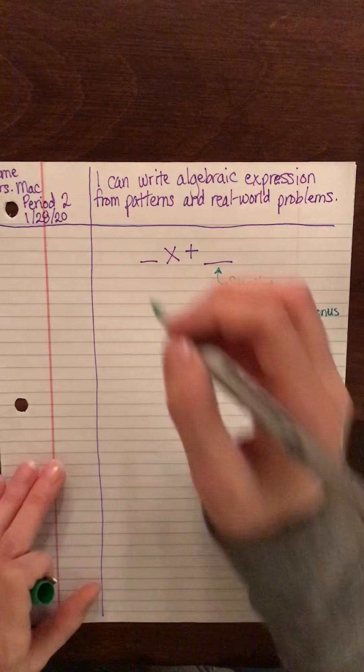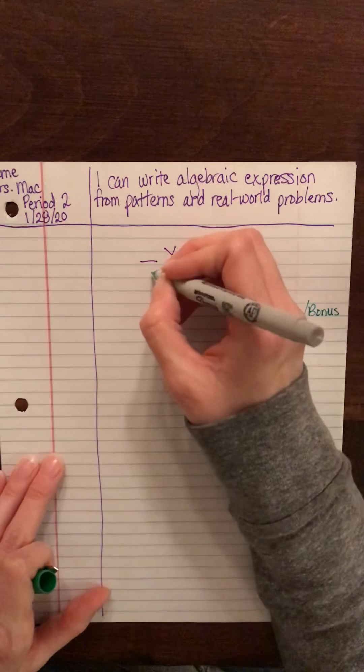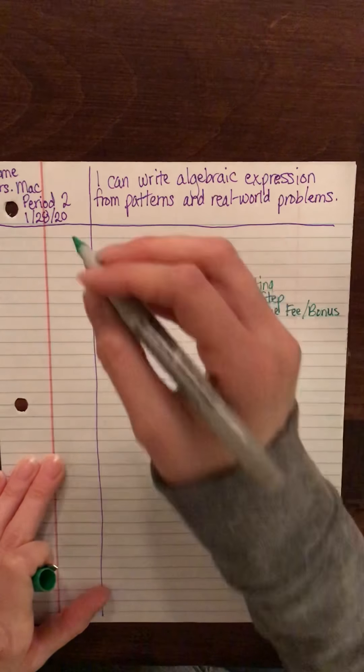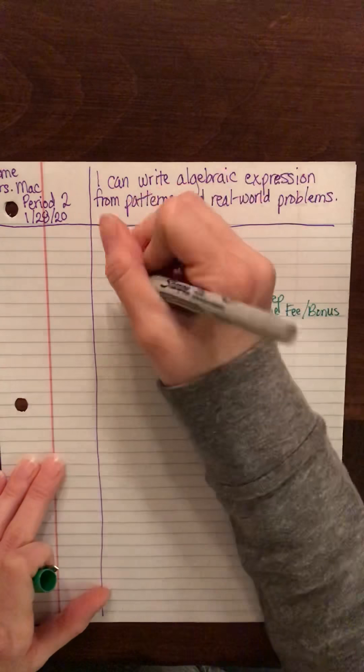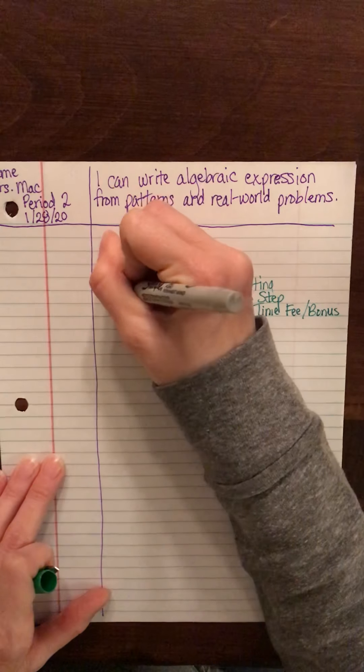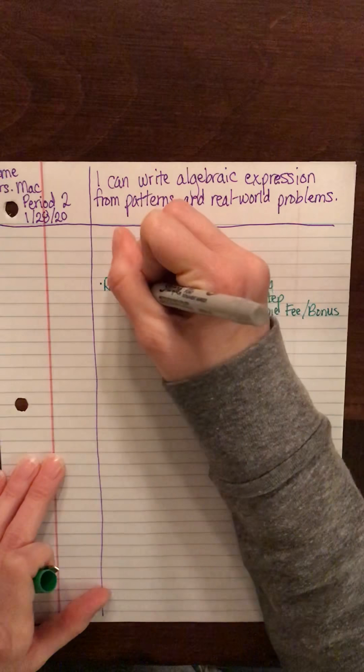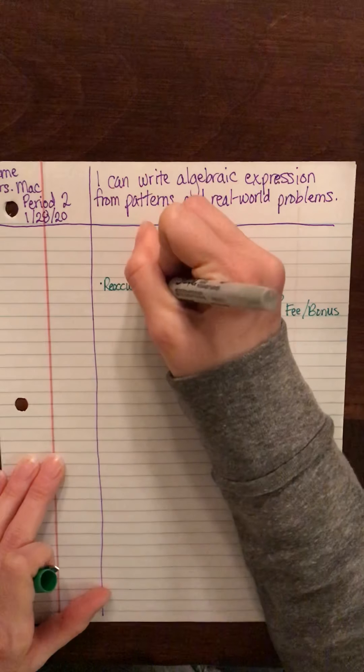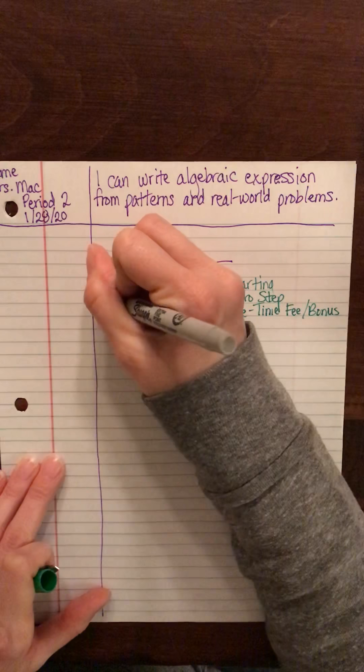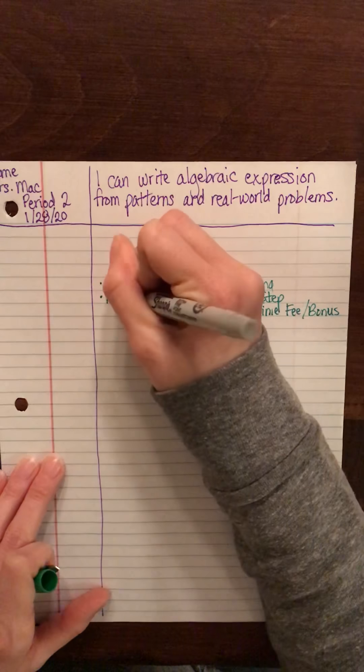Okay, this number that's being multiplied by your variable is your reoccurring amount, or sometimes it's referred to as the rate.